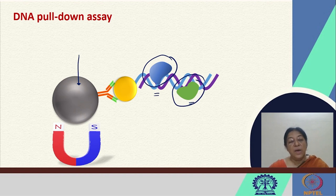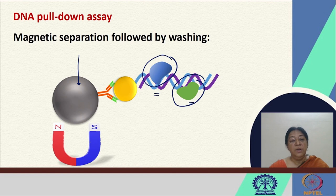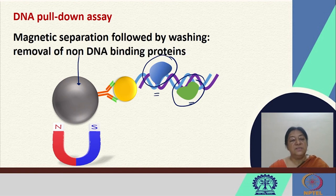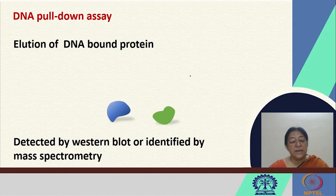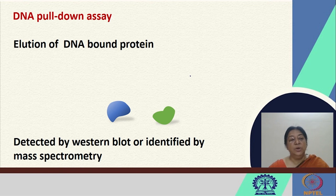The protein bound to the DNA must then be eluted or removed for analysis. Magnetic separation is followed by washing, which removes the non-DNA binding proteins. The DNA bound protein is then eluted and can be detected by Western blot analysis or identified by mass spectrometry. In this fashion, the DNA bound protein can be isolated using this specific assay.